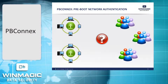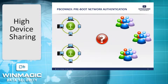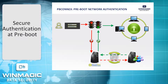Once encryption is added to the security arsenal in any organization, a new challenge presents itself: how to provide secure access at pre-boot to encrypted devices, and only to those users who should have that access. In organizations where devices are extensively shared, this can become a costly administrative task and one that could result in access bottlenecks. The solution is SecureDoc Enterprise Server's PB-Connects, permitting secure authentication at pre-boot across the network — something that only WinMagic can offer.